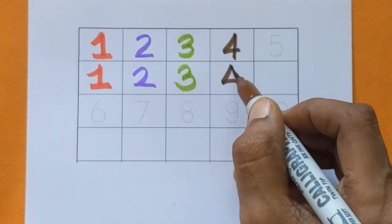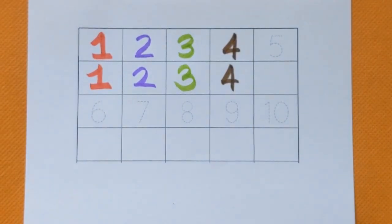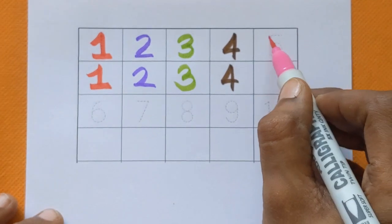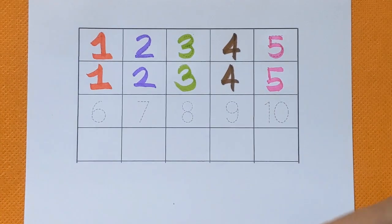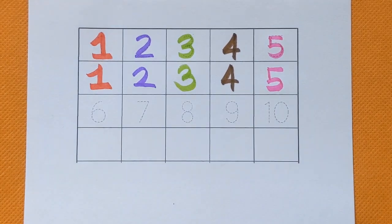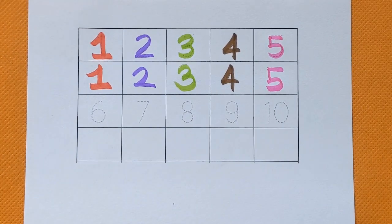Number four, brown color. After number four, which number is this? This is number five. Number five, pink color. Next is number six.